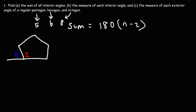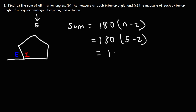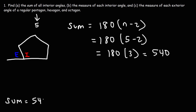For this one we're dealing with a pentagon, so n is five. Five minus two is three, and 180 times three is 540. So for a regular pentagon, the sum of all of the interior angles is 540 degrees.